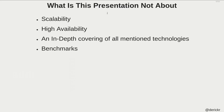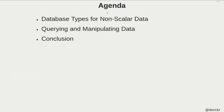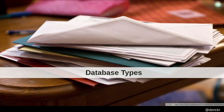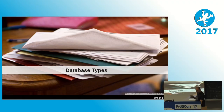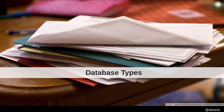What this presentation is not about: I'm not going to talk about scalability, high availability, or benchmarks, and I don't have time to cover all the mentioned technologies — I'd need a whole day for that and I only have 57 minutes left. The things we're going to look at are database types for non-scalar data, querying and manipulating data, and a recap at the end. You're probably familiar with relational databases — MySQL, PostgreSQL, Oracle, IBM DB2, MS SQL. But in the last 15 to 20 years a whole bunch of other database types have come to market, often called NoSQL, though non-relational database is probably a better description.